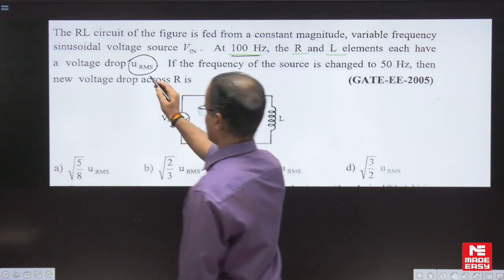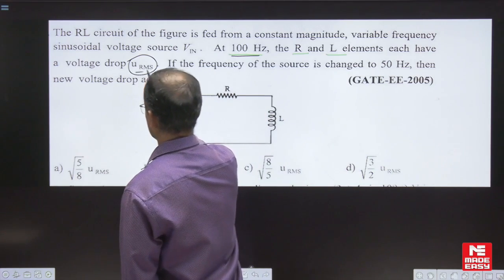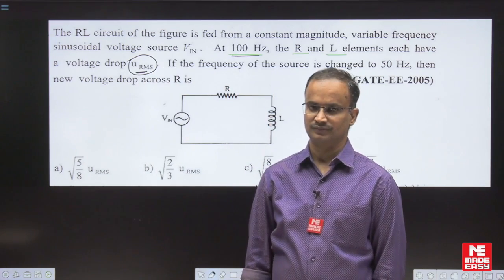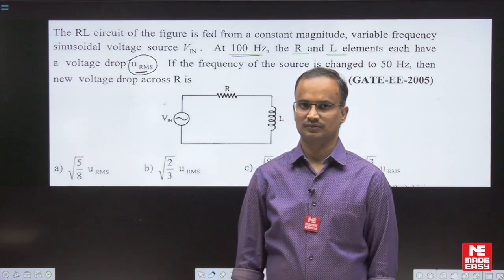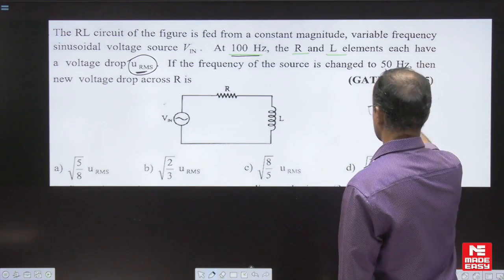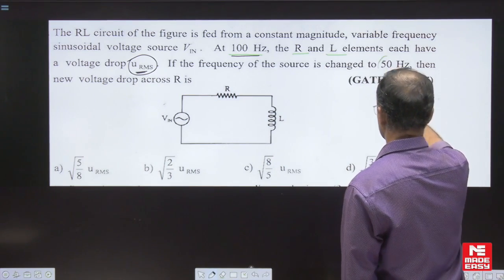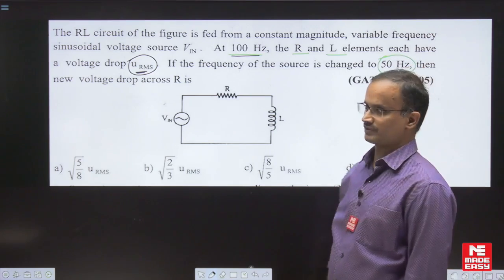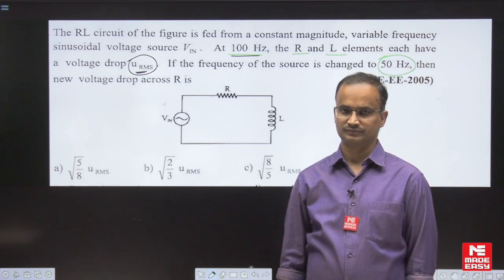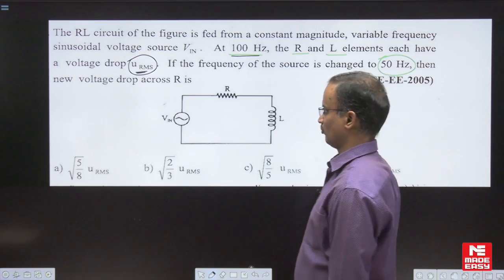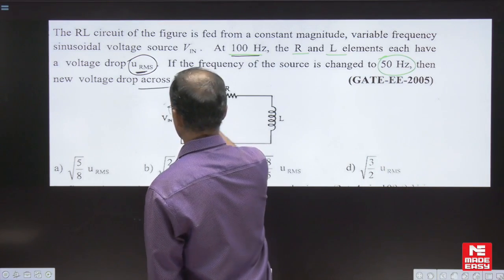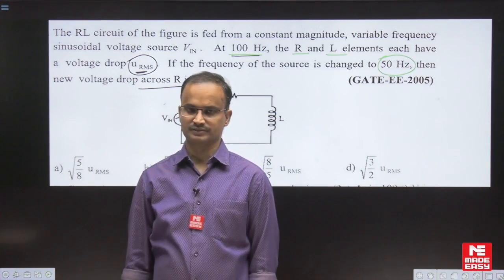That voltage is equal to URMS. Then in the question, what is being asked: whenever the source frequency changes to 50 Hz, you have to find out the voltage across the resistance.